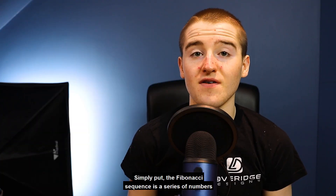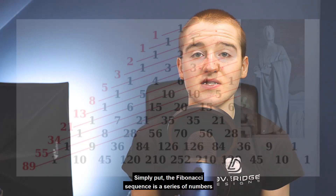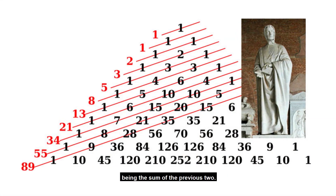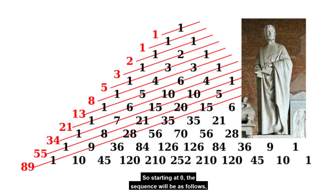Simply put, the Fibonacci Sequence is a series of numbers with the pattern of each number being the sum of the previous two.